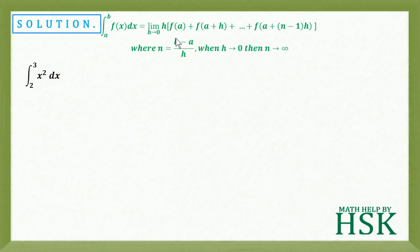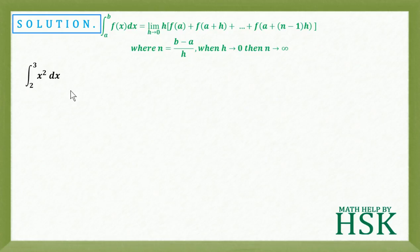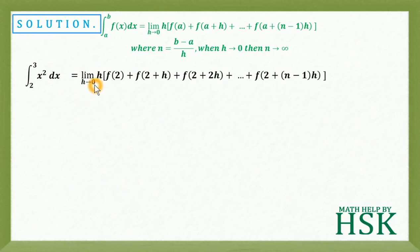In this formula, we write f of a, f of a plus h, and so on up to f of a plus n minus 1 into h, where a is the lower limit. Here the lower limit is 2, so this will be equal to limit as h tends to 0 of h times: f of 2 plus f of 2 plus h plus f of 2 plus 2h.